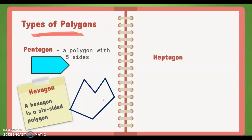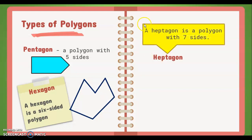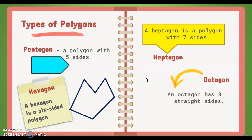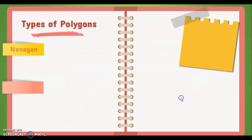A heptagon has seven sides, like this one. Next, an octagon has eight sides, like this. Next, a nonagon — a nonagon is a polygon with nine sides.